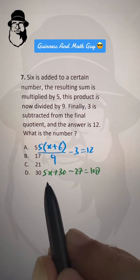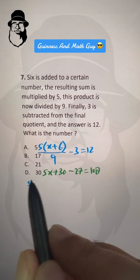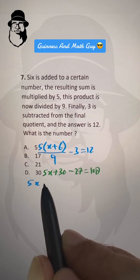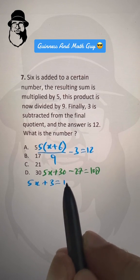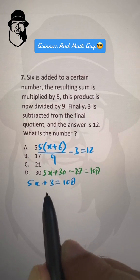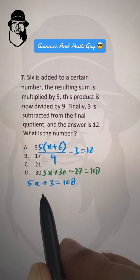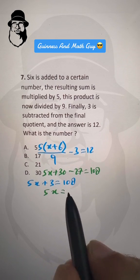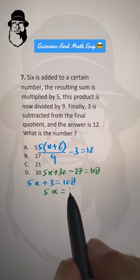After that, 5x, this 30 minus 27 is 3, equals 108. And then subtract 3 from both sides to get 5x is equal to 108 minus 3 is 105.